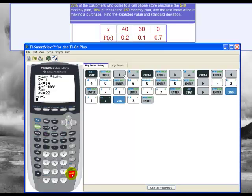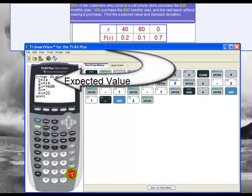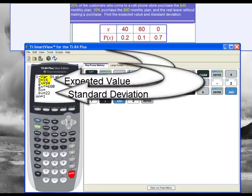So I'm interested in the expected value and the standard deviation. The expected value for the calculator is x bar and that's 14. And the standard deviation, that's sigma x, and that's 22.